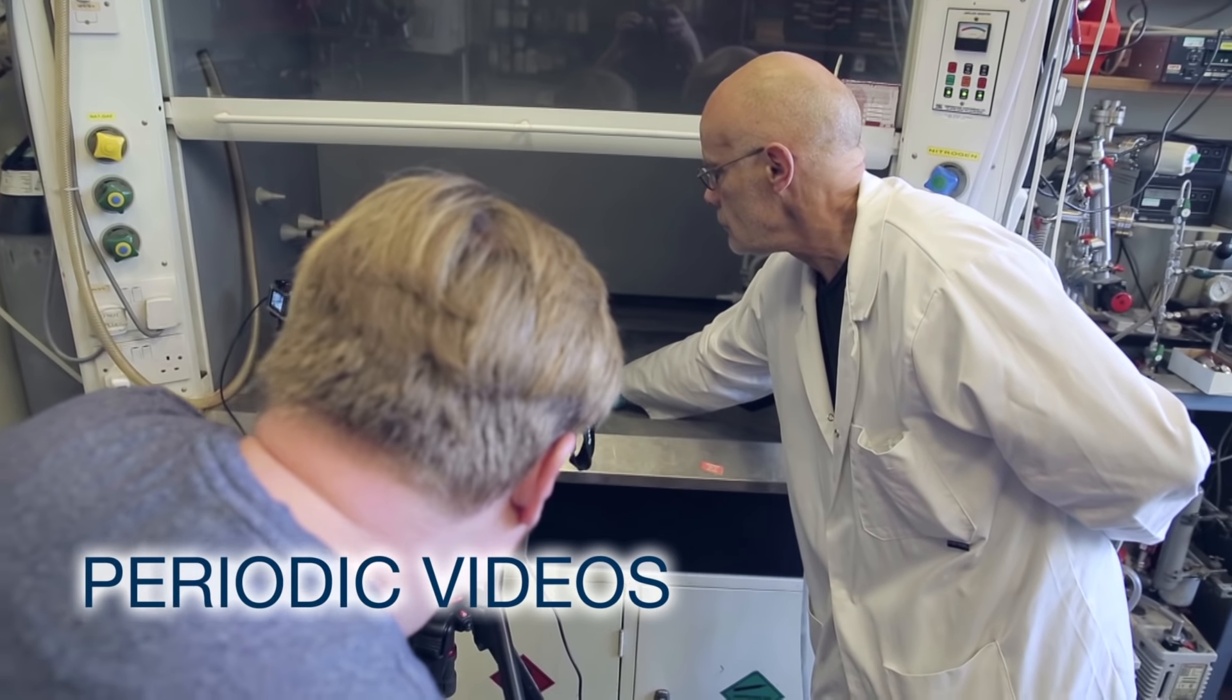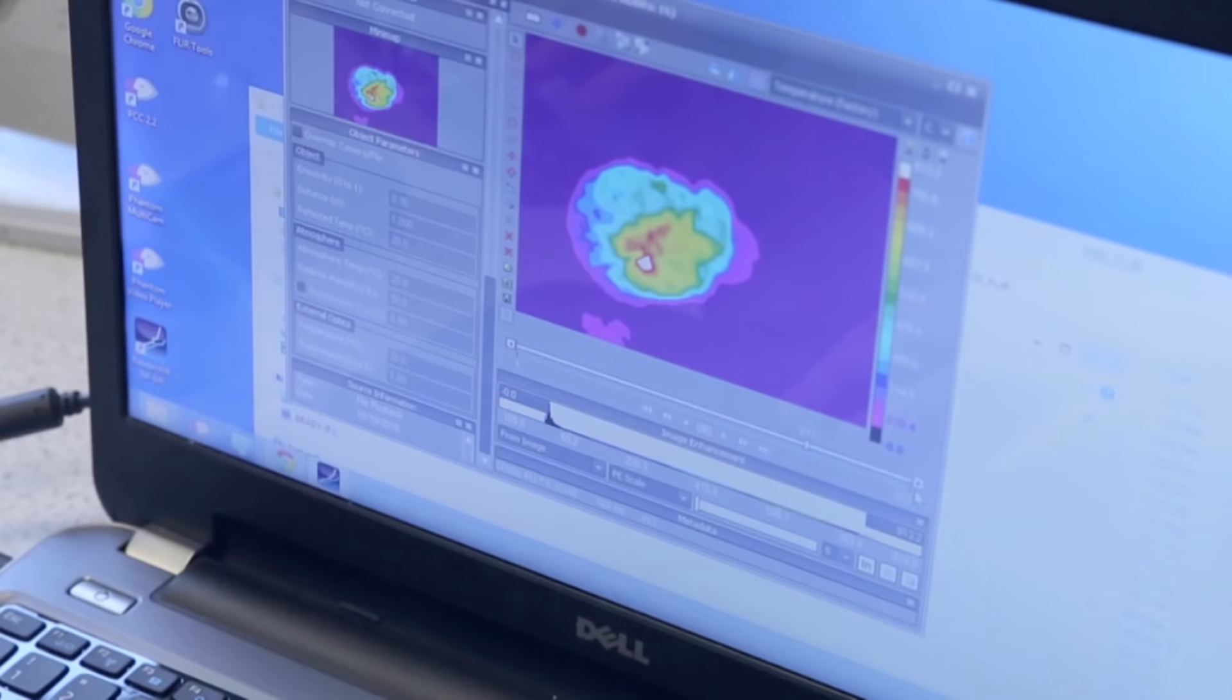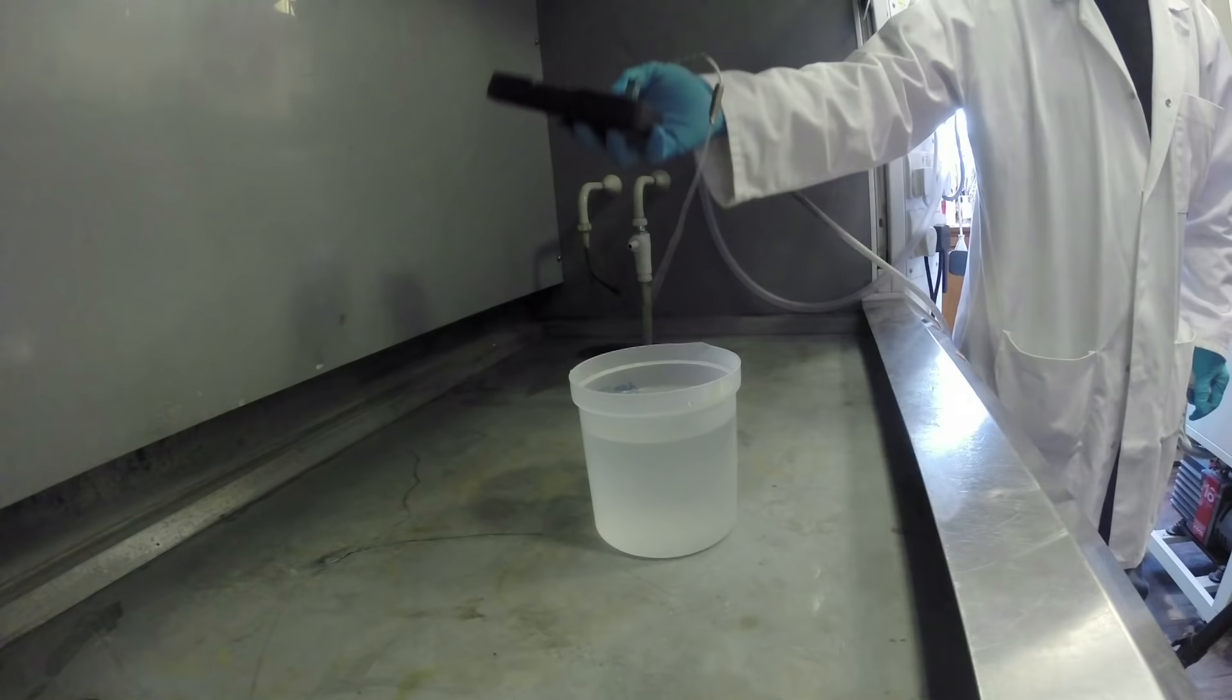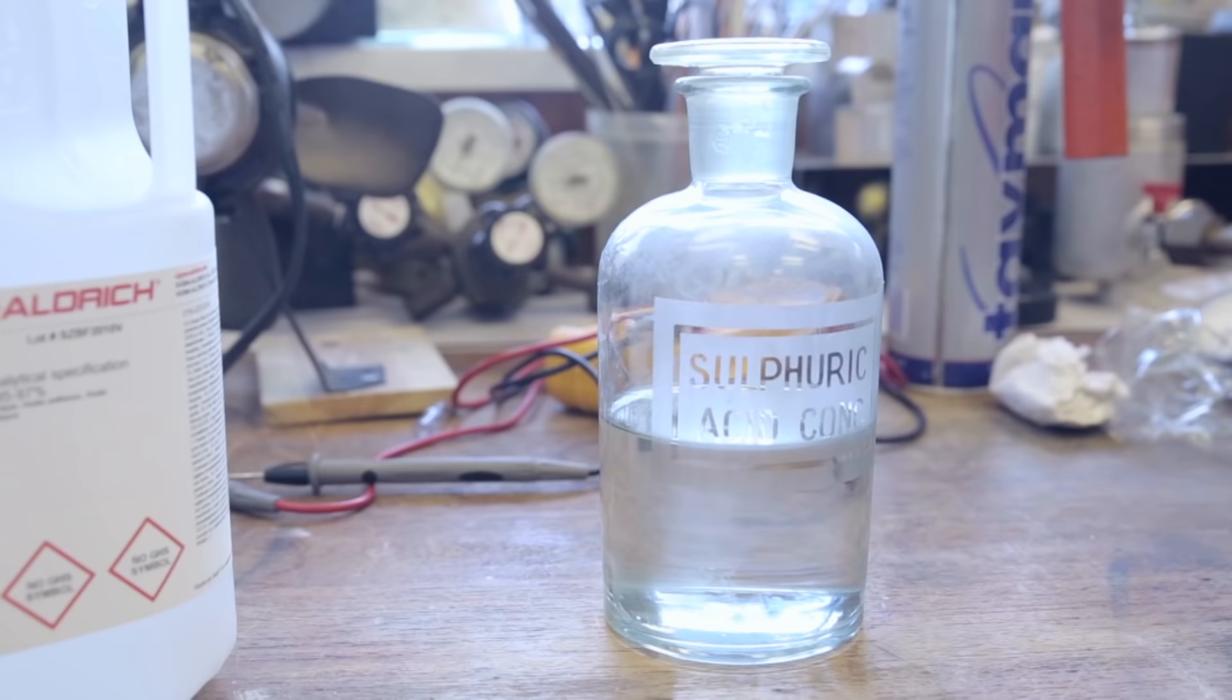Even really simple experiments can sometimes teach you interesting and unexpected things, especially if you look at the temperatures. We're going to show you two different experiments. The first one is pouring sulfuric acid into water.